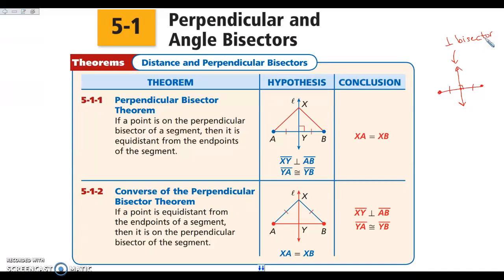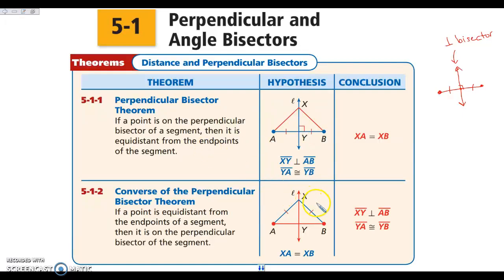Our perpendicular bisector theorem states that given a perpendicular bisector, every point on that bisector is equidistant from the endpoints. So distances AX and XB are going to be the same — it doesn't matter where I put the point. These two dotted lines are going to have the same distance wherever I go. The converse is that if a point is the same distance from the endpoints of a segment, then that point lies on the perpendicular bisector.